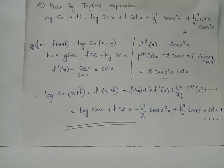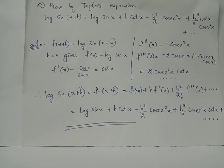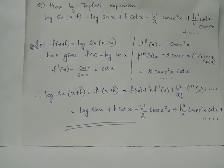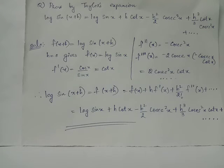Here we have f(x) equals log sin x, h times f'(x) equals h cot x. The term h squared by 2 factorial times f''(x) is h squared by 2 factorial into minus cosec squared x, which can be written as minus h squared upon 2 cosec squared x. The next term will be h cubed upon 3 factorial into 2 times cosec squared x cot x.